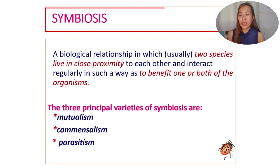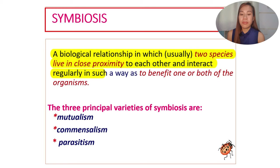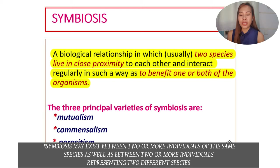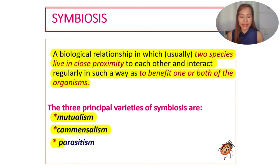Symbiosis is a biological relationship between two species living in close proximity to each other. They interact in a way that benefits one or both organisms. There are three principal varieties of symbiosis: mutualism, commensalism, and parasitism.